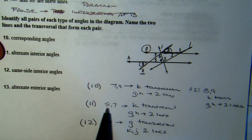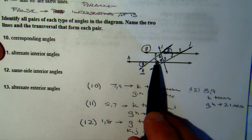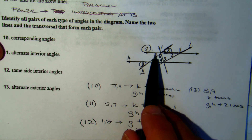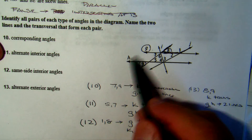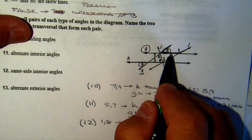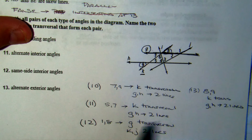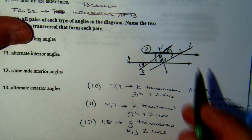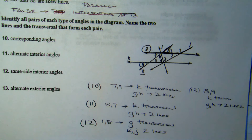Alternate interior angles: angles 5 and 7 are on opposite sides of transversal K, between lines G and H. Same side interior angles: angles 1 and 8 are both on line G, so G is the transversal and K and J are the two lines. Same side interiors always make a U-shape or C-shape.